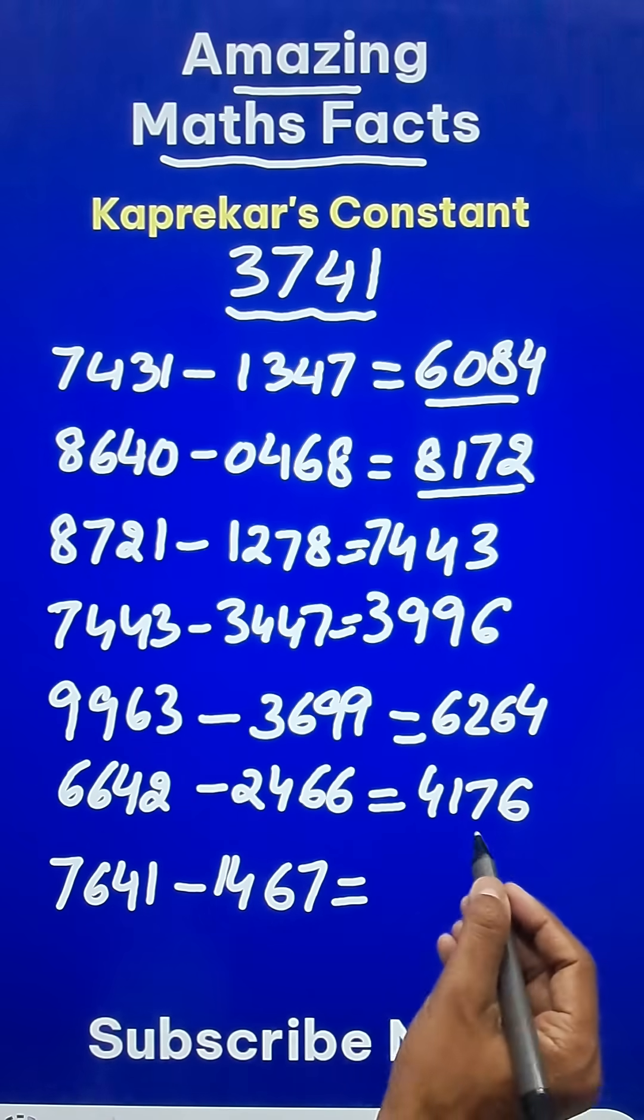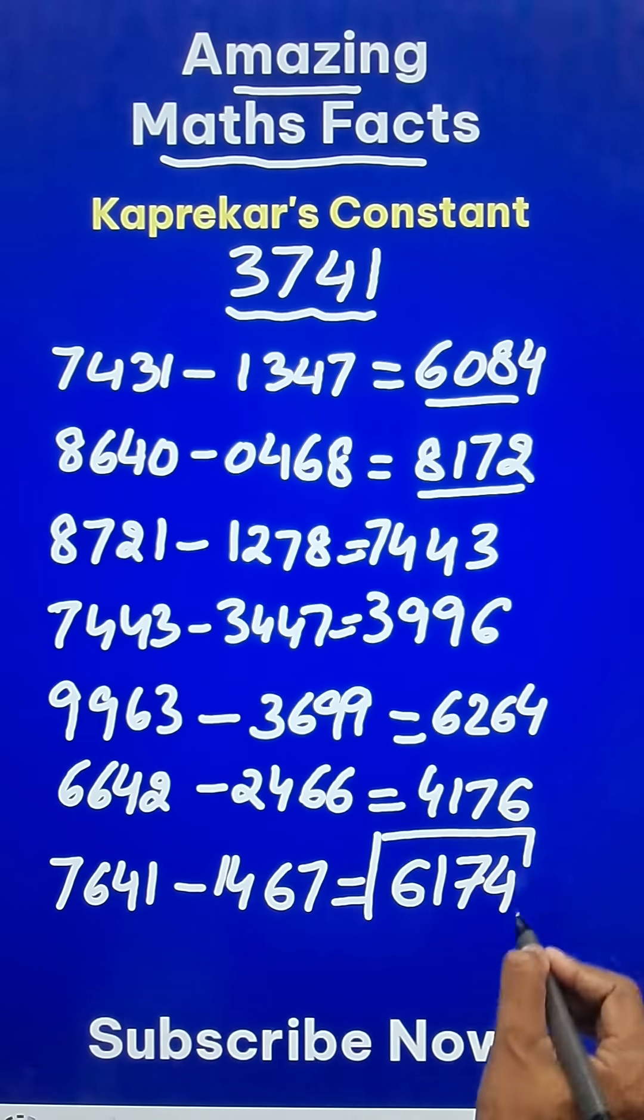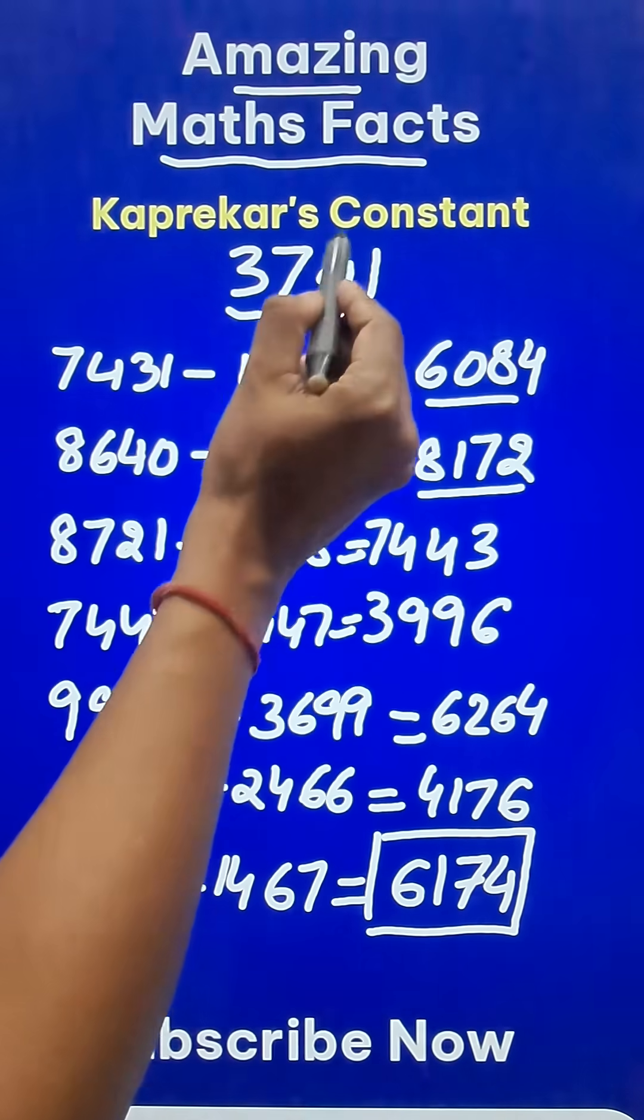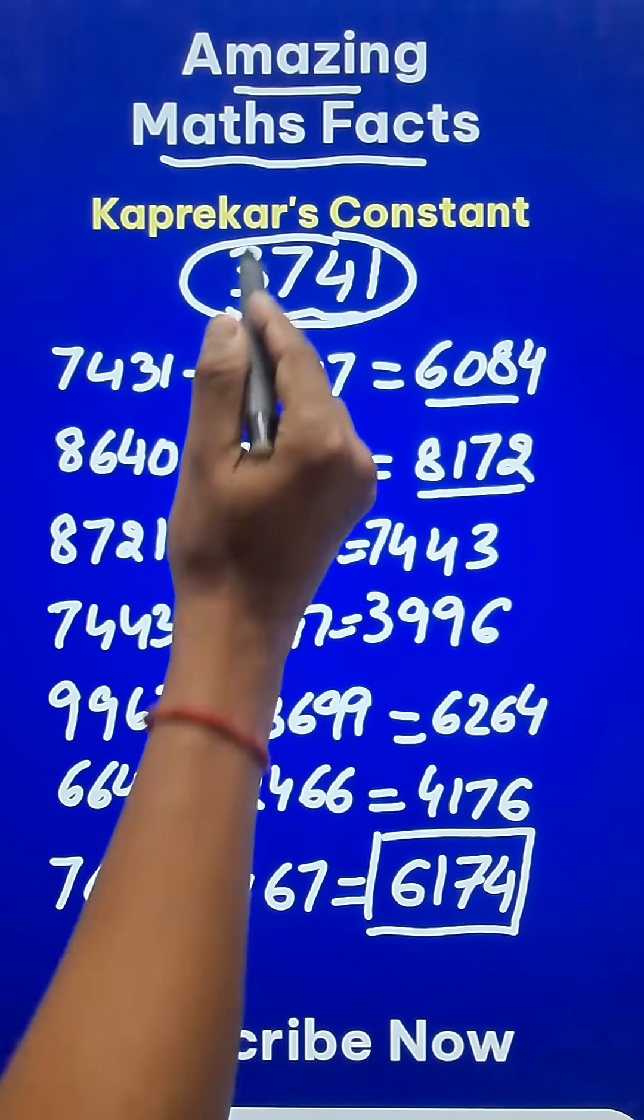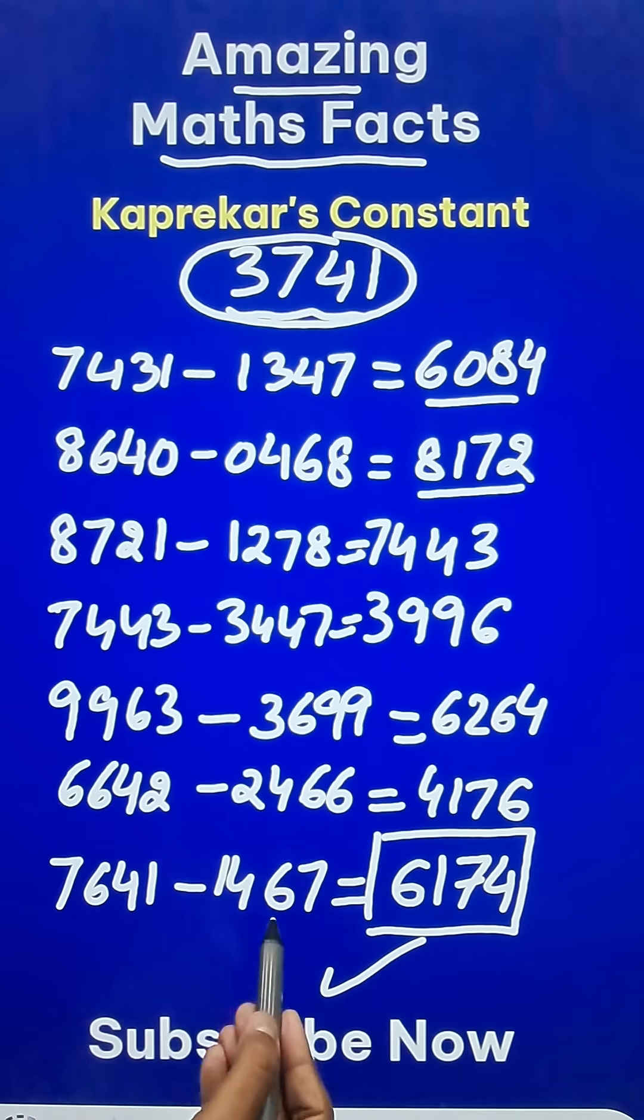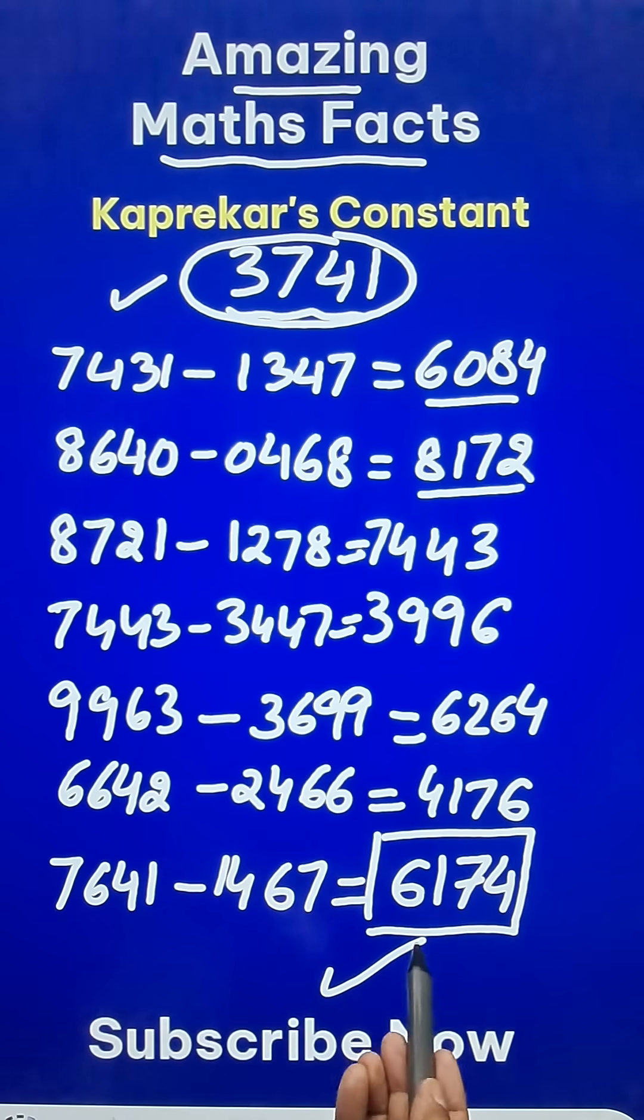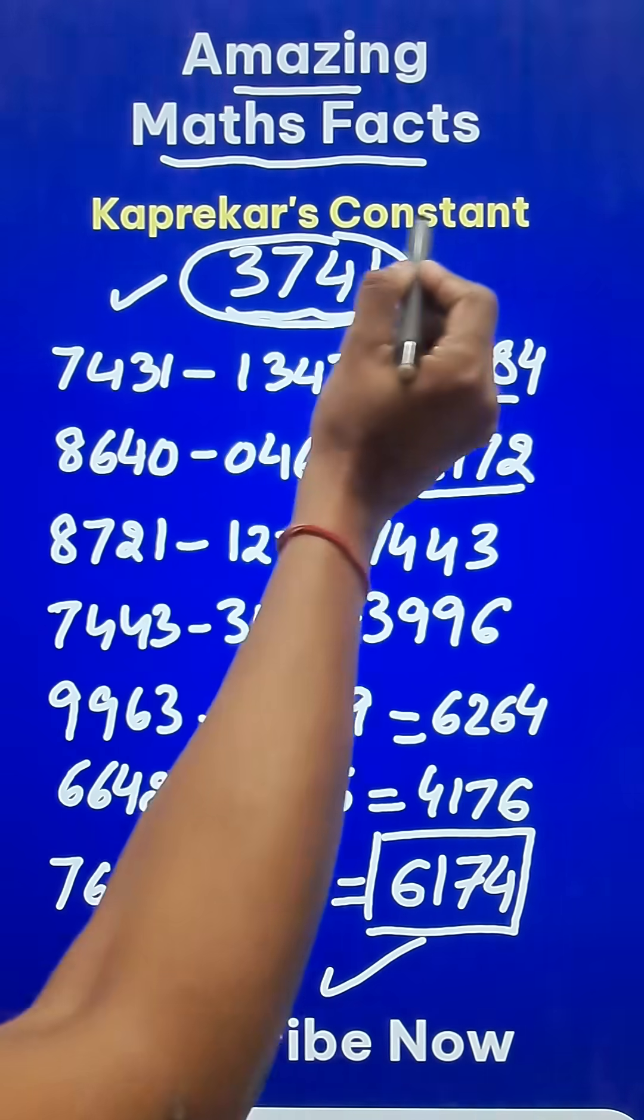And here you have the magic number 6174. Surprisingly, when you do these operations on any four-digit number, you are always going to get 6174 as the result, but the number of steps are going to differ. You can check using some other number and this number 6174 is known as the Kaprekar's constant.